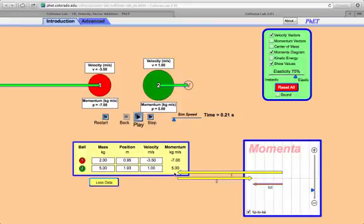If I add that together, I still get a momentum of negative two, and notice that total momentum arrow is still the same, negative two. So I have to consider the whole system. Clearly, momentum is conserved.